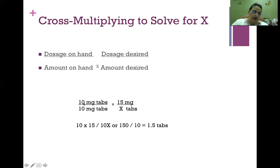Here's an example. We're going to give something that comes in 10 milligram tablets—that's our dosage on hand. The amount on hand is also 10 milligram tablets. We want to give a 15 milligram dose, and we need to know how many tablets. So we're going to do some cross multiplication. First, we multiply 10 milligrams times 15 milligrams, or 10 times 15. Then we divide by 10x. So 10 times 15 is 150, and then we divide 150 by 10, which gives us 1.5 in its simplest form.